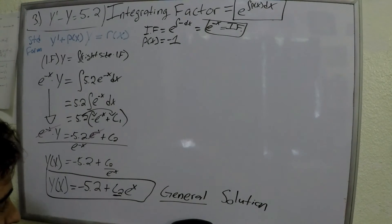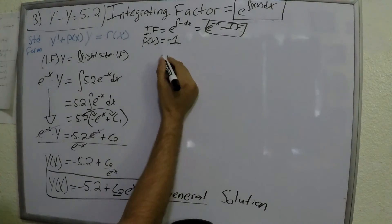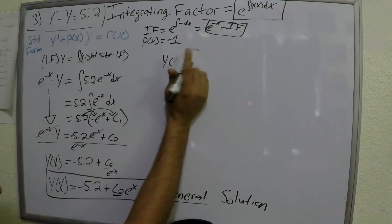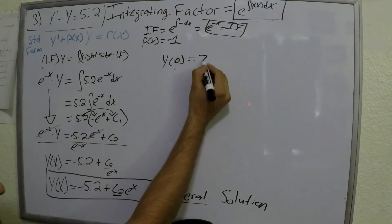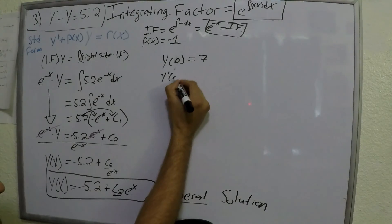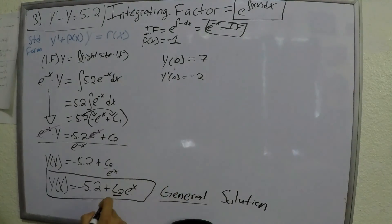And that right there will be our general solution. Again, it is general because we have a constant. It would be explicit if it was like 2 e to the x or 3 e to the x. No constant, it's exact, it's explicit. It's general because we weren't given any initial conditions. Had we been given, oh, a y of 0 equals 7, or y prime of 0 equals negative 2, then we'd be able to solve for that constant and it would be explicit. But since we don't, that's what we're left with. That is the solution to this ODE.